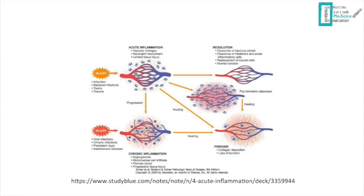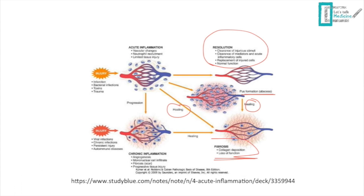If acute inflammation progresses, outcomes include resolution, pus or abscess formation, healing with fibrosis and scarring, or progression to chronic inflammation. In chronic inflammation, lymphocytes predominate, angiogenesis occurs, and eventually fibrosis, collagen deposition, and loss of function result.